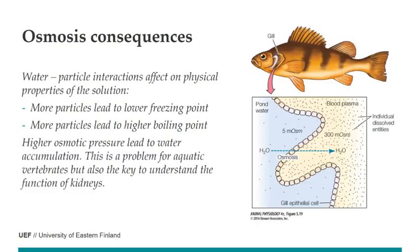Higher osmotic pressure also leads to water accumulation. For aquatic vertebrates, especially fish, this is a significant problem. Vertebrates have an osmotic pressure of around 300 milliosmoles, equivalent to roughly 150 millimoles of a salt like sodium chloride. In fresh water, where osmotic pressure is much lower, water accumulates in the fish. If that same fish is placed in the ocean, where osmotic pressure is much higher, water fluxes away from the fish.